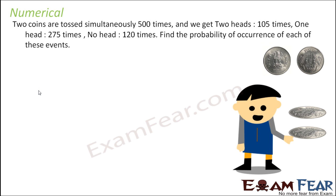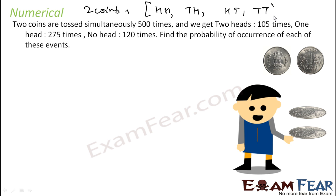Let's take a few more examples. Two coins are tossed. When two coins are tossed, what is the output? You can get head-head, you can get tail-head, you can get head-tail, and you can get tail-tail. Since it is all done together, tail-head and head-tail are considered as one, because we are not tossing them separately. So assuming both coins are the same, there are three distinct events.